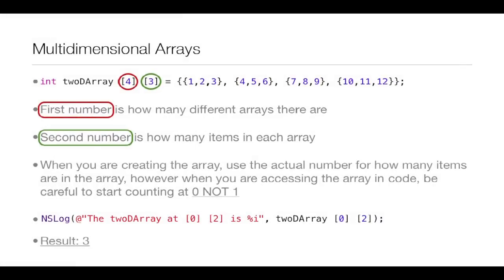Starting off we have multi-dimensional arrays, and as you can see that's what a multi-dimensional array looks like — at the beginning it looks just like a C array. You have int, the type of the array, and then the name, so we're just going to call this one '2D array'. Then you start to get into where it differs from a regular C array: instead of just one number within a bracket, you actually have two sets of brackets. The first number is how many different arrays there are, and the second number is how many items are in each array.